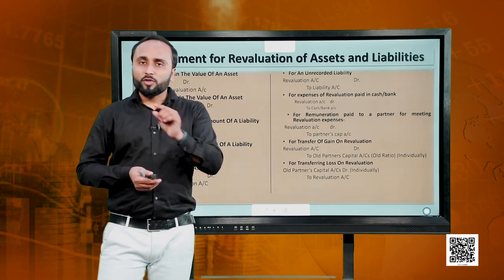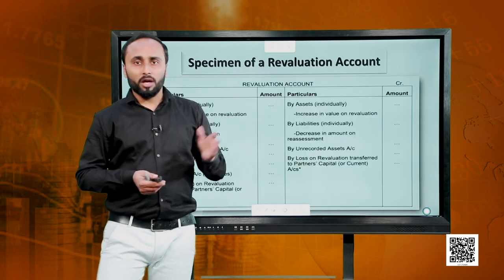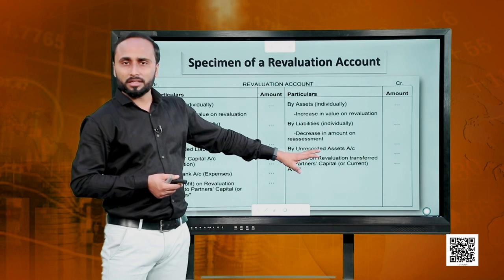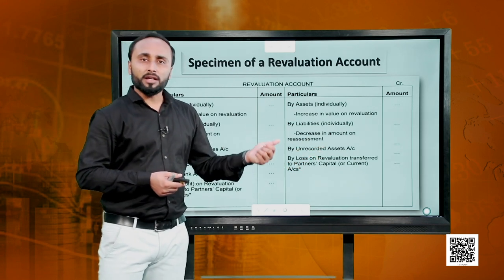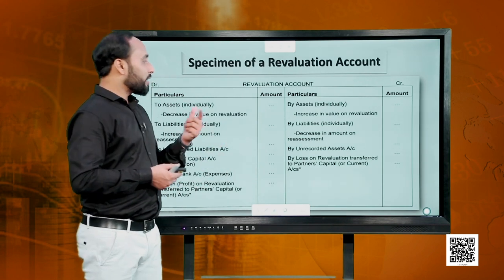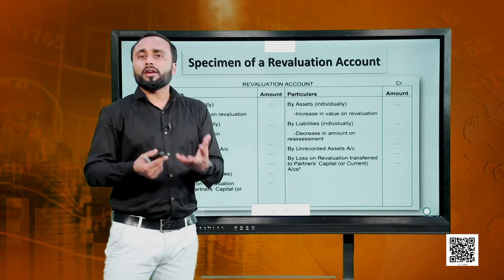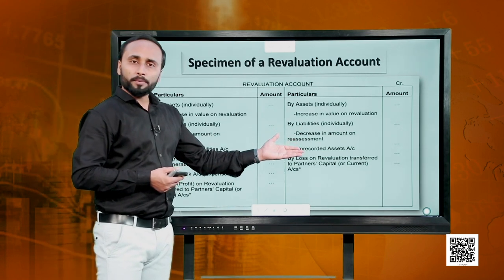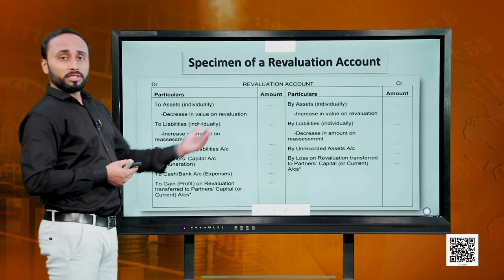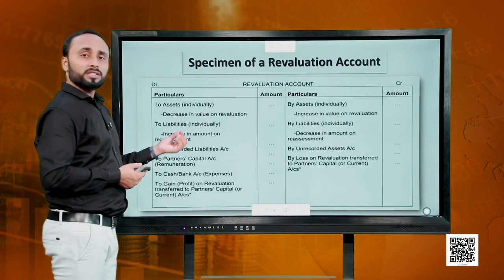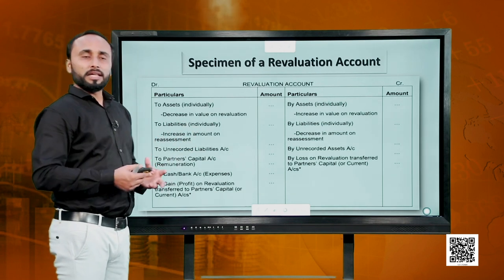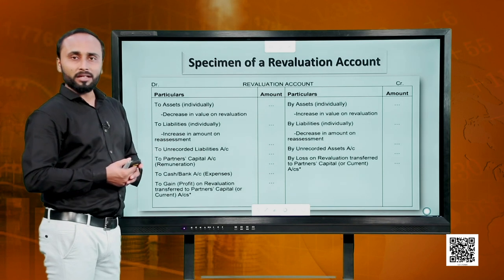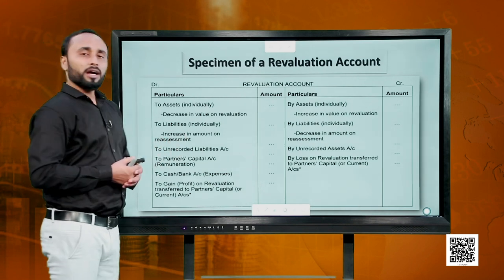The proper treatment is that all the old or existing partners before the reconstitution are entitled to the gain or liable to suffer the loss due to revaluation. Whenever we do revaluation, we prepare a revaluation account. On the credit side we write all changes that are beneficial to the firm — either an increase in assets, a decrease in liabilities, or an unrecorded asset found.